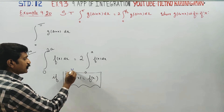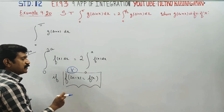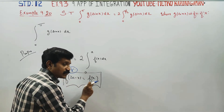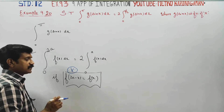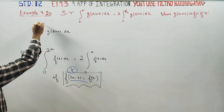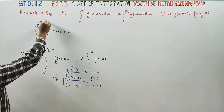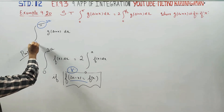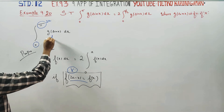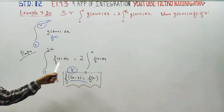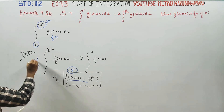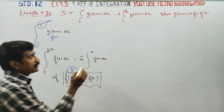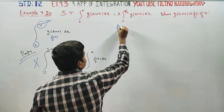This formula applies if and only if the condition is satisfied: f of 2a minus x is equal to f of x. I will put this idea into the sum. I am going to refer to property number 10, applying it to f of x.